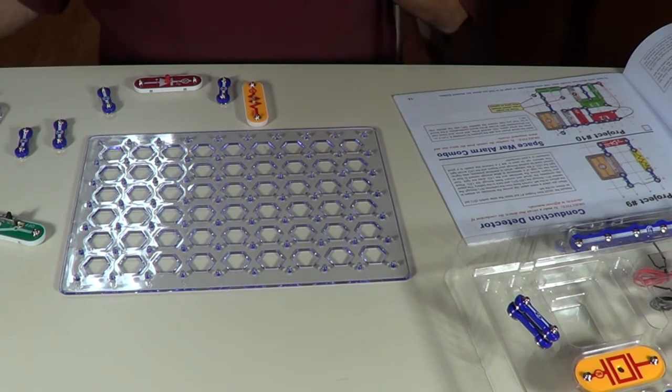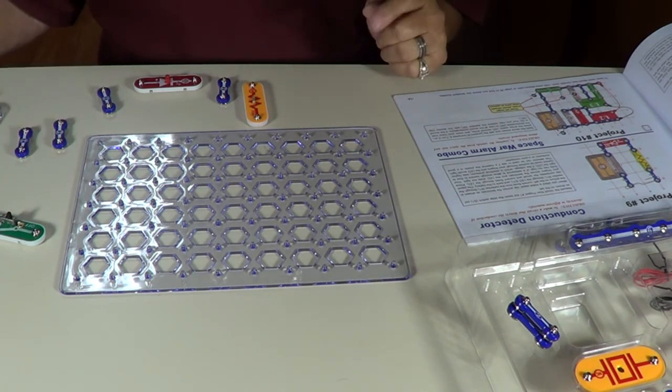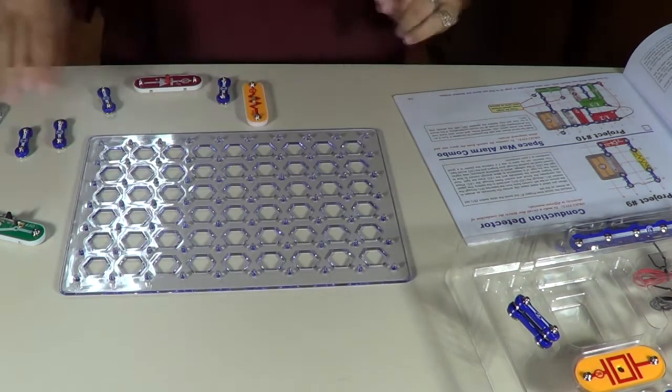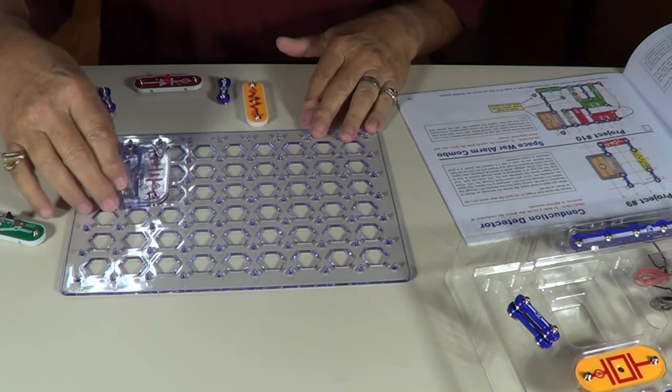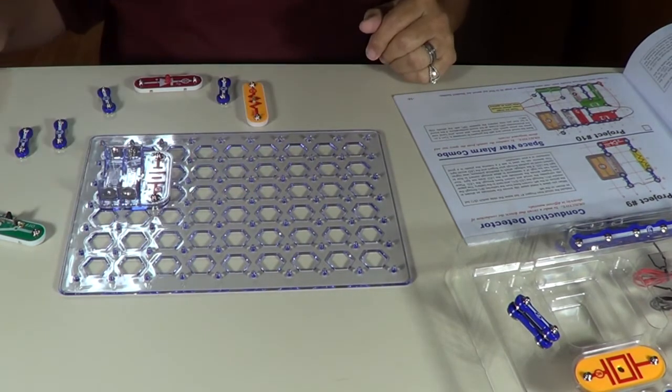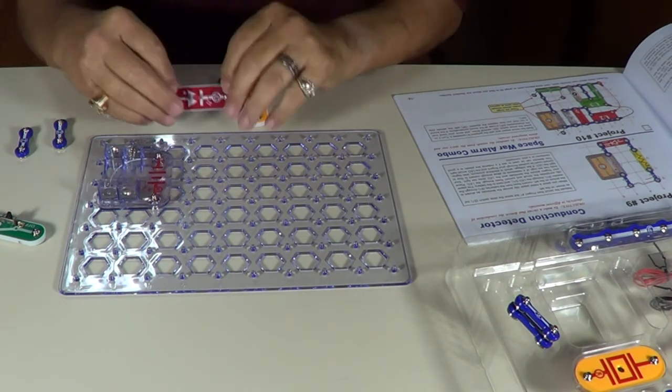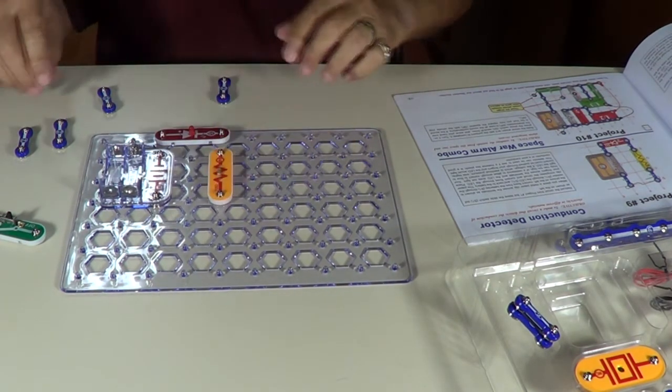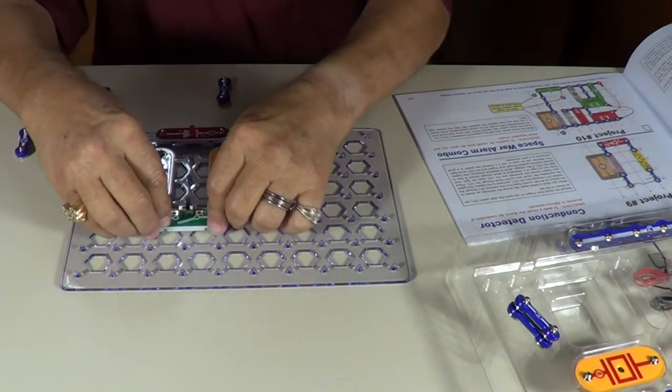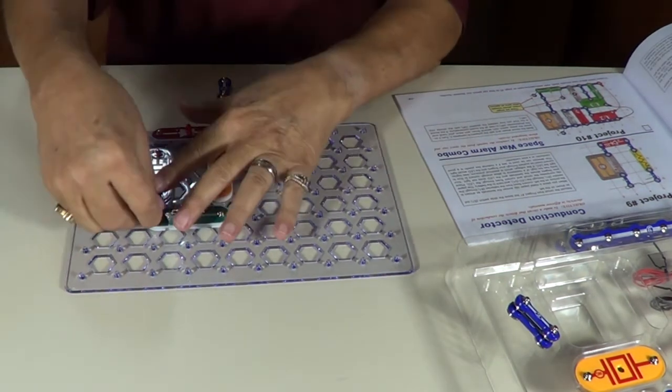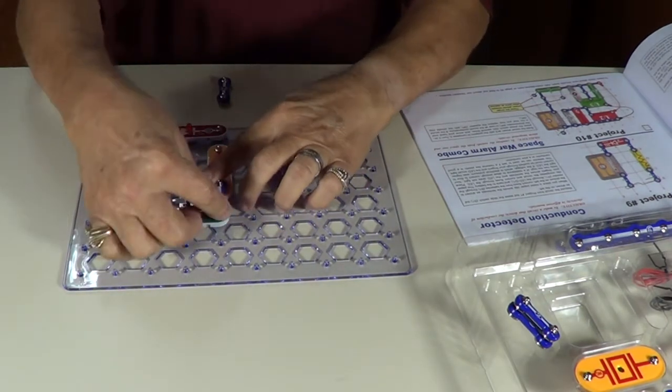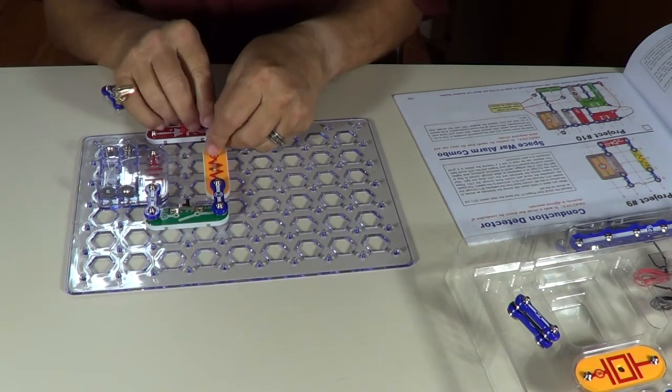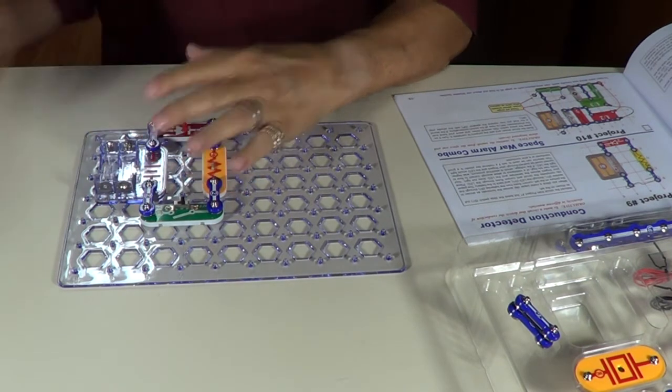For project number eight we're going to show you LEDs. Now LEDs are diodes, light emitting diodes, and they're directional, so they'll only work in one direction. I'll show you. Put your battery pack in, okay. Put your directional LED in right there. Put your resistor in right there. Put your switch in there. Connect battery to the switch, switch to the diode, I mean to the resistor, excuse me. Resistor to the diode, diode to the battery. Put your batteries in.